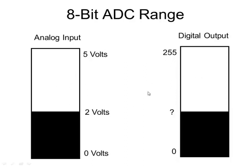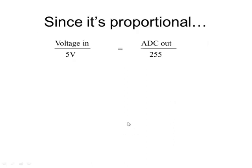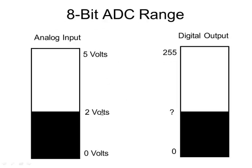Let's say our sensor produced a 2-volt output — that's the input to the A-to-D converter. So the question is, what's the digital output going to be? It's a simple proportion. Our voltage in divided by 5 volts is the same as the ADC out over 255 — here's our voltage in compared to 5, ADC out compared to 255.